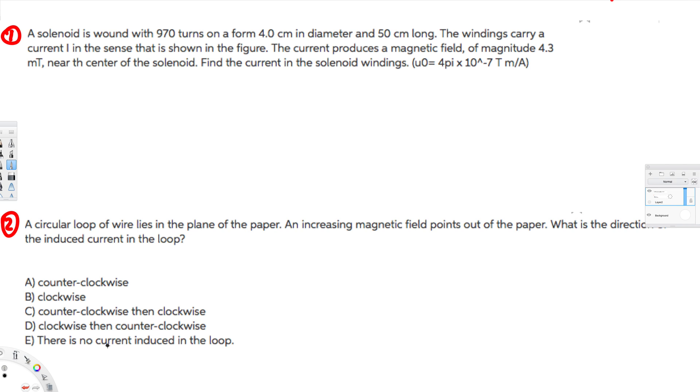Hey what's going on guys, let's do this problem. A solenoid is wound with 970 turns on a form 4 centimeter in diameter and 50 centimeter long. The winding carries a current I in the sense that is shown in the figure. We don't have the picture but we don't need a picture.